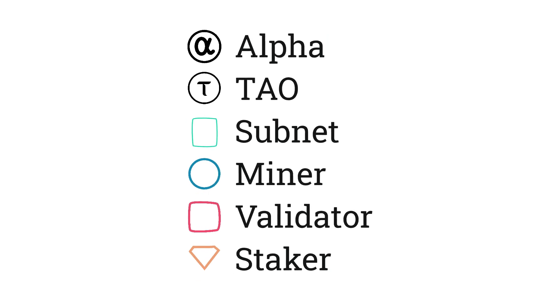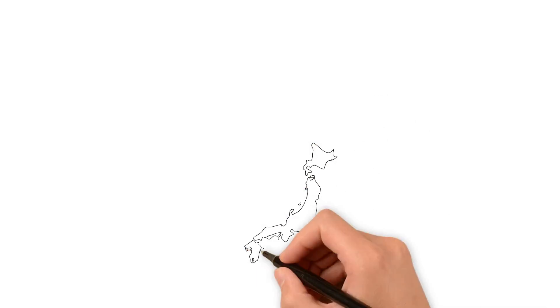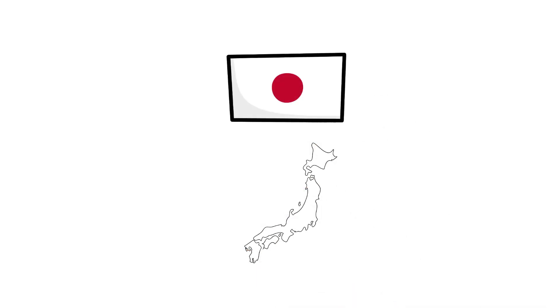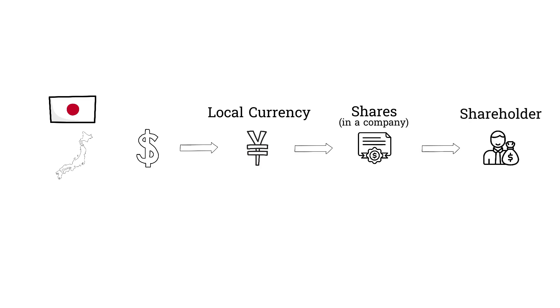I want to use an analogy to help break it down. Let's say you want to buy shares in a Japanese company. You're going to have to convert your currency to the country's local currency, the Japanese yen. Once you have yen, you can use it to purchase shares in the company. And once you've purchased shares in that company, you're called a shareholder.